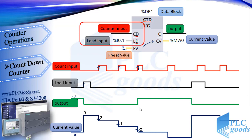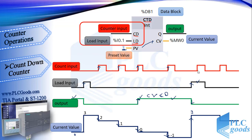At this moment the output changes to on. For this counter, the output will be on if the current value is equal to or less than 0. With next pulses, the current value decreases and the output remains on. When we have another positive pulse at the load input, it transfers the preset value to the current value and turns off the output. Like the previous counter, if both inputs are activated, the load command takes priority over counting.